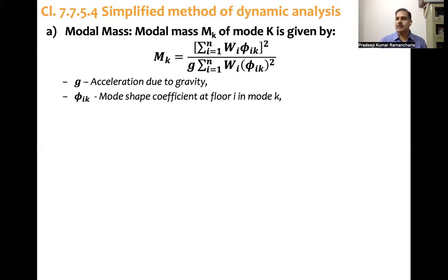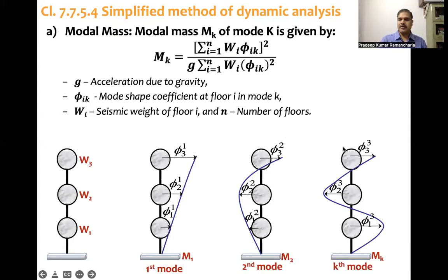Where g is acceleration due to gravity and φik is mode shape coefficient, ith floor in kth mode. wi is seismic weight of floor i and n is number of floors. Simply in this expression we can plug in. These are the mode shapes: three story building, this is lumped mass idealization, first mode looks like this, second mode and third mode. Whichever modal mass we want, we put that number here and get the modal mass, the first parameter.